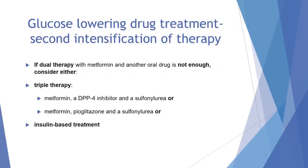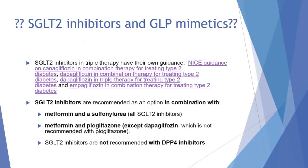At second intensification, if dual therapy with metformin and another drug is not sufficient, we need to consider triple therapy or starting insulin. Triple therapy options are: metformin, a DPP-4 inhibitor and a sulfonylurea, or metformin, pioglitazone and a sulfonylurea. SGLT2 inhibitors in triple therapy are recommended in combination with either metformin and a sulfonylurea, or metformin and pioglitazone — but this applies only to canagliflozin and empagliflozin, not dapagliflozin. SGLT2 inhibitors are not recommended in combination with DPP-4 inhibitors.